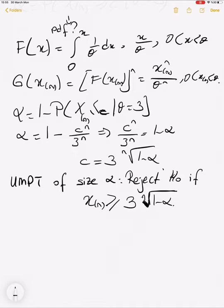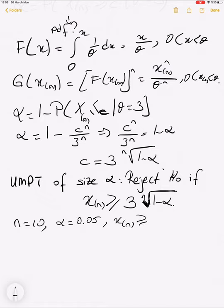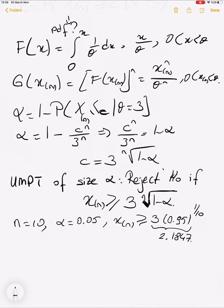After finding the test, we can also compute the power function, type II error probability, and so on. For example, when n = 10 and α = 0.05, the critical value is c = 3 × (0.95)^(1/10) ≈ 2.847 (approximately 2.85). So if the maximum sample value exceeds this, we reject the null hypothesis.